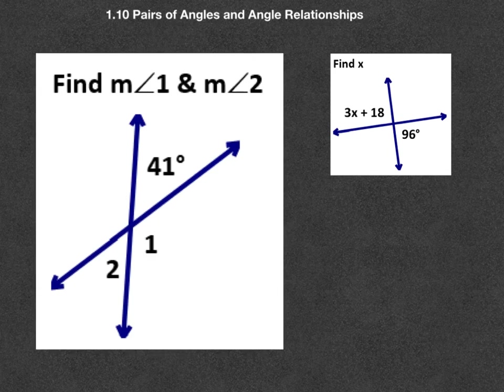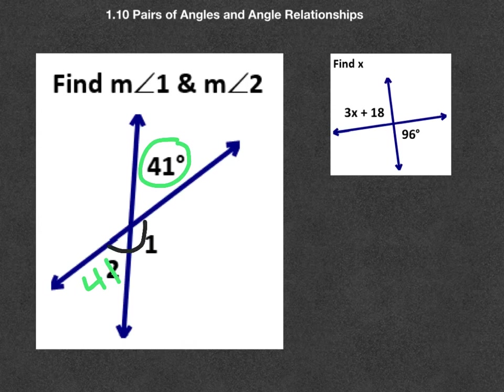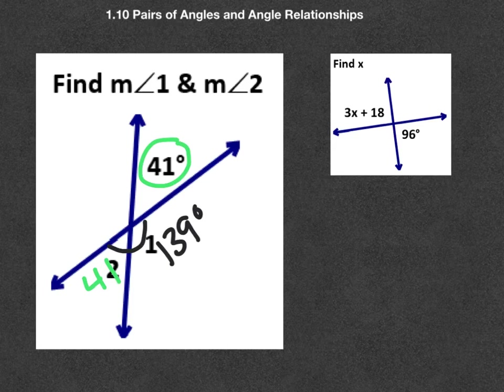So just a quick example of this. If this is 41, the vertical angle would be 41. And as you know, this is a lines pair, a linear pair. So they add to 180. So this would be 139 degrees, a very quick and simple value there.